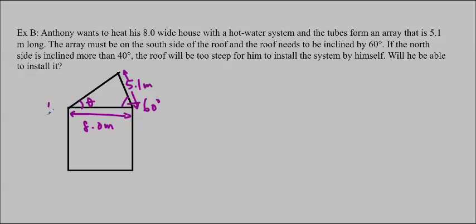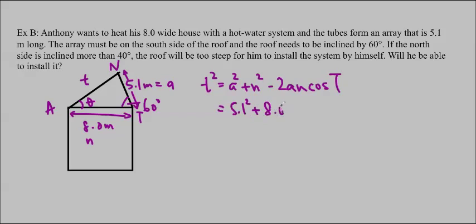Let's label this. Let's call it A, N, T for Anthony. This will be little a, little n, and little t. Because we have a side angle side situation, we are going to have to use cosine law. We don't know what little t is. Little t squared equals a squared plus n squared minus 2 a n cos T. Just fill those in. 5.1 squared plus 8.0 squared minus 2 times 5.1 times 8.0 cos 60 degrees. Just type it into your calculator, and you should get that t is equal to 7.0 meters, approximately.